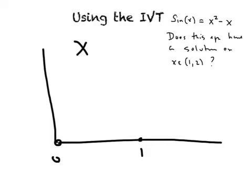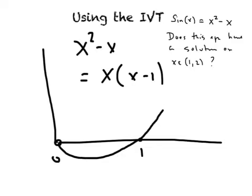x squared minus x is really equal to x times x minus 1, which means that it's got roots at 0 and 1. It's also turning up, so we know that this function has to look something like this. This is x squared minus x.